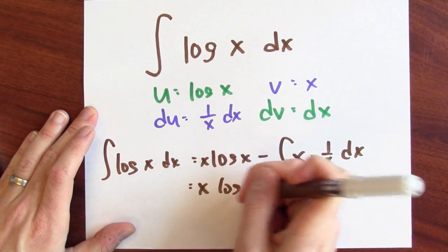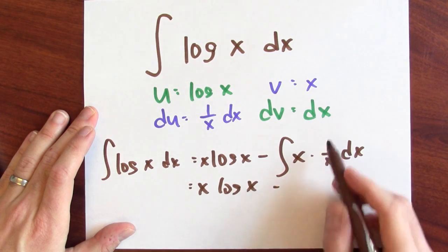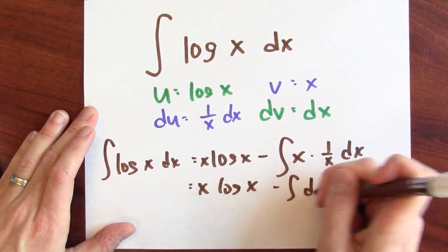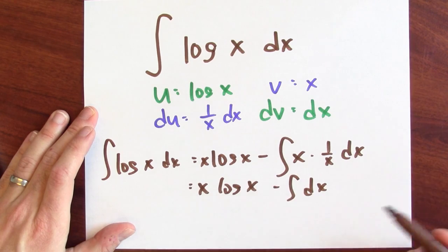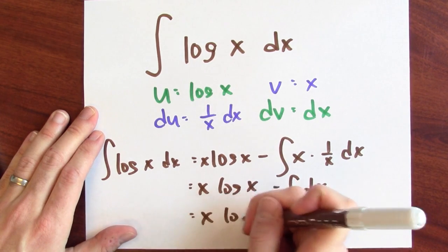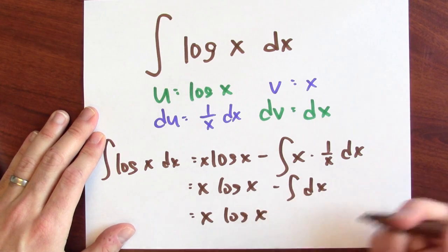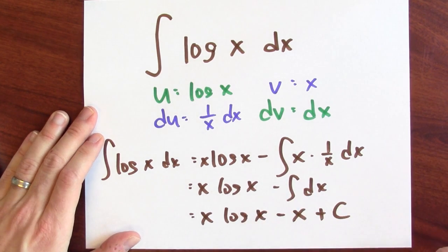And I've got x log x minus x times 1 over x, that's just 1. So I'm just anti-differentiating dx. And I've got x log x, what's an antiderivative of 1? It's just x. And I'll add a constant.